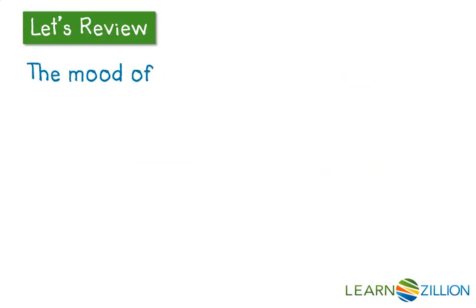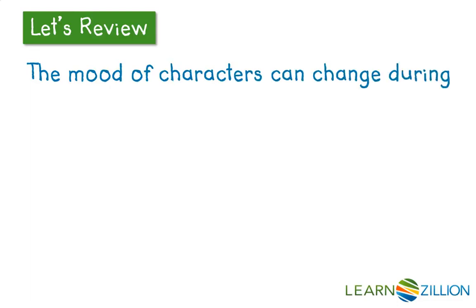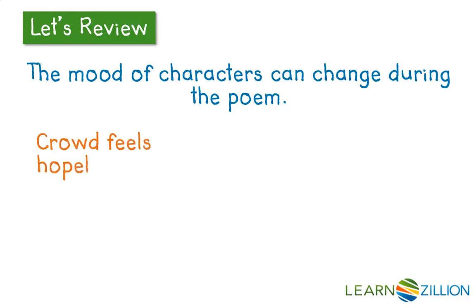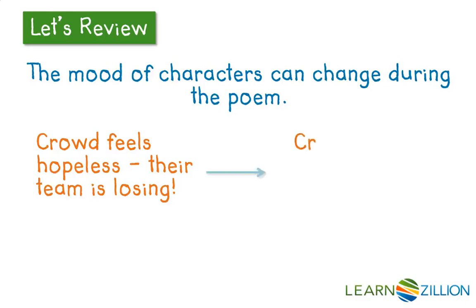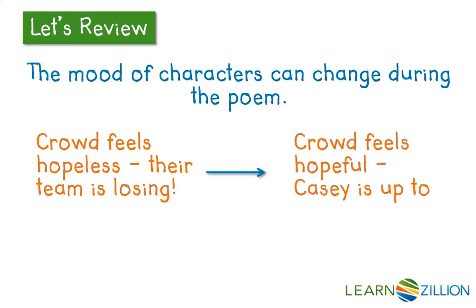We've also learned that the mood of characters can change during the poem. We looked at the characters of the crowd. At first, their mood was hopeless because their team was losing the baseball game. But then we saw that the mood can change. Later, the crowd felt hopeful because Casey was coming up to bat and they thought he could save the day.